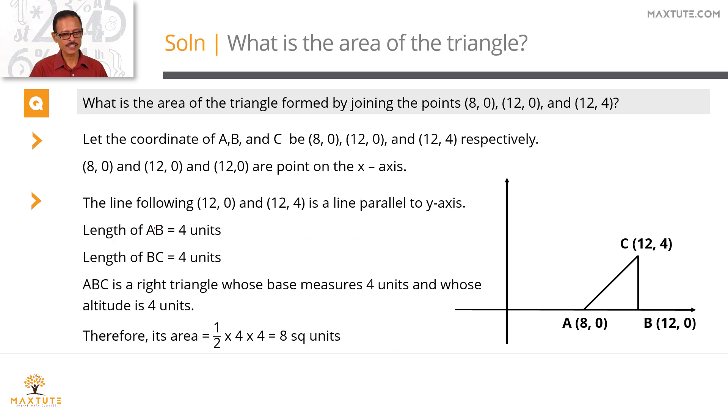Quickly summarize it in a printed form. Length of AB is 12 minus 8, which is 4 units. Length of BC is 4 minus 0, which is also 4 units. So for a right triangle, area equals half times base AB times altitude BC. Half times 4 times 4 equals 8 square units.